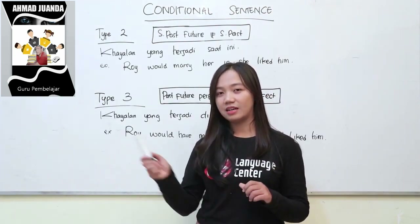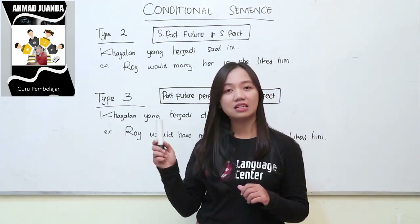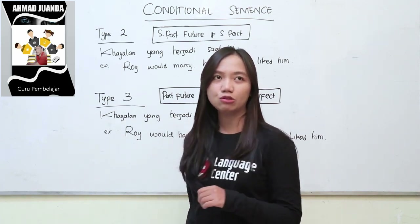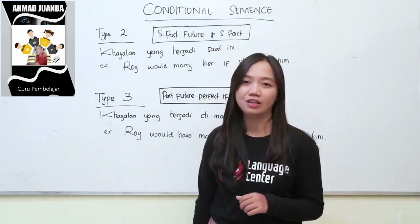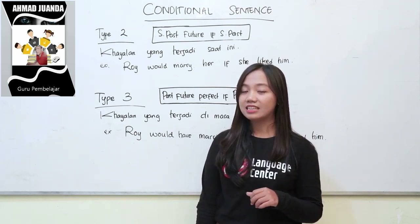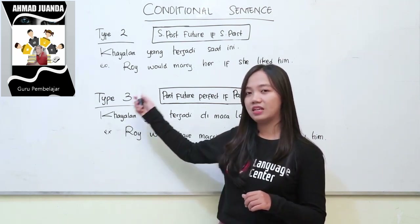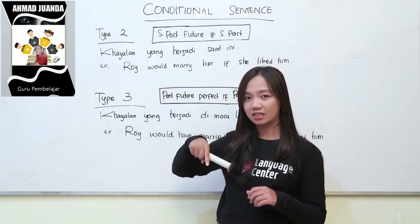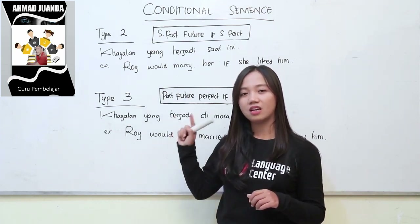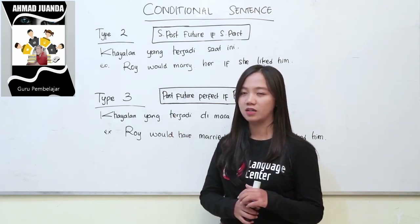Type 2 dan type 3 mereka berdua ini sama-sama menjelaskan tentang hayalan. Hayalan — berarti kenyataannya tidak seperti itu, hanya hayalan. Di type 2, yang membedakan adalah type 2 ini adalah ketika hayalannya terjadi sekarang. Kalau di type 3, hayalan itu terjadi di masa yang lampau banget, udah lalu banget.